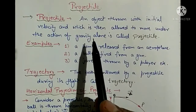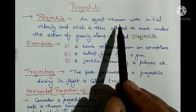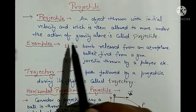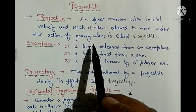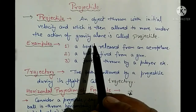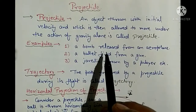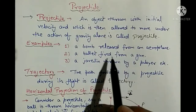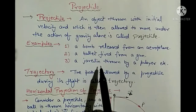Hello everyone, today we are going to study about projectile. First of all, what is a projectile? A projectile is an object thrown with initial velocity and which is then allowed to move under the action of gravity alone. Projectile koi bhi object jab hum usko initially kuch velocity deke horizontal direction mein thrown karte hain aur uske baad usko hum left karte hain under the effect of gravity, to wo projectile kehlata hai. For example: a bomb released from an aeroplane, a bullet fired from a gun, and a javelin thrown by a player.